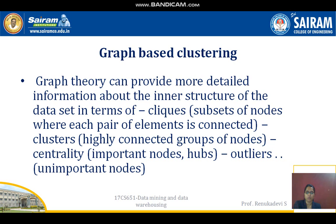The following are some of the key approaches used by this algorithm. First, clarify the proximity graph to keep only the connections of an object. With respect to graph theory, it can provide more detailed information about the inner structure of the data set in terms of cliques. It defines a similarity measure between two objects based on the number of nearest neighbors that they share. That is the subset of nodes where each pair of elements is connected. A cluster is nothing but highly connected groups of nodes.